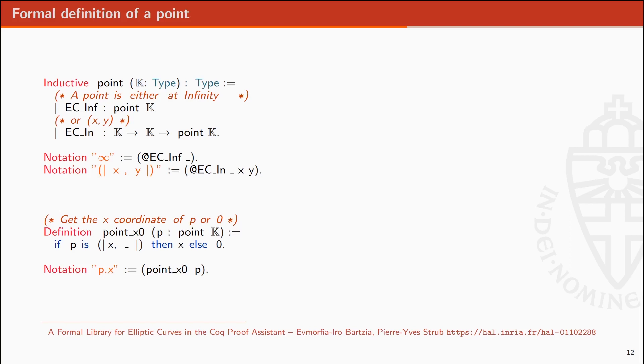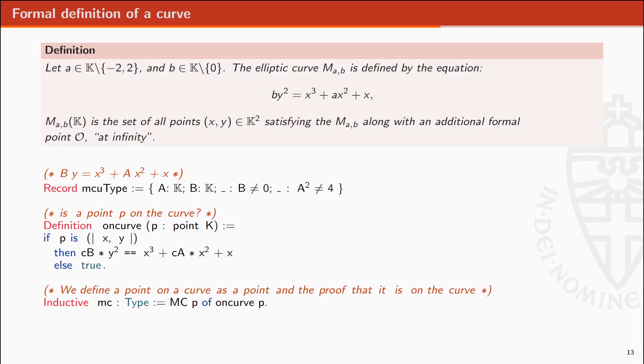This formalization is similar to the one found in the library by Bartzia and Strub, where they focus on Weierstrass curves. A Montgomery elliptic curve over a field K is defined by two parameters, A and B, where B is not null and A square is different from 4.